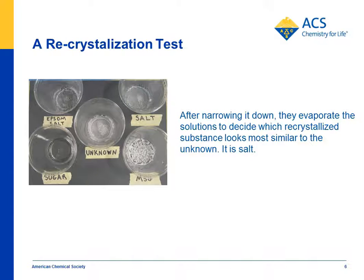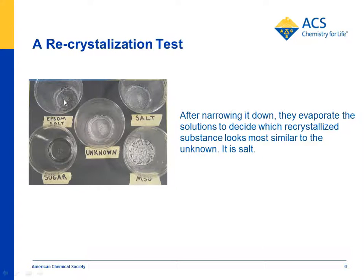After the dissolving test, students pour off the liquid into separate cups and allow it to evaporate — this is called a recrystallization test. This test confirms what the unknown is. If you compare the unknown to Epsom salt, sugar, or MSG, it's pretty clearly different. The one it's most similar to is salt, so students conclude that the unknown is salt.